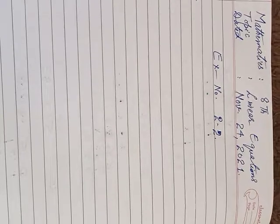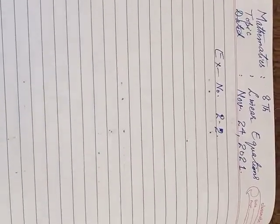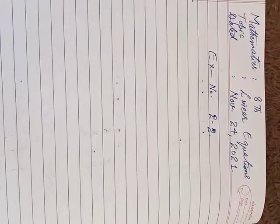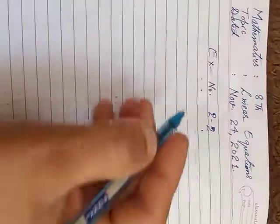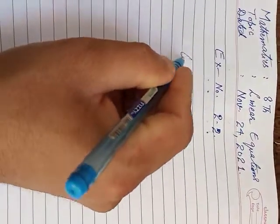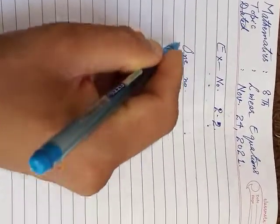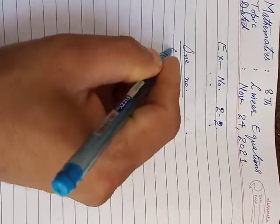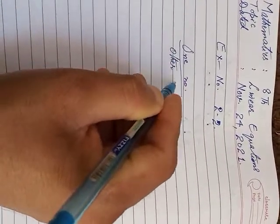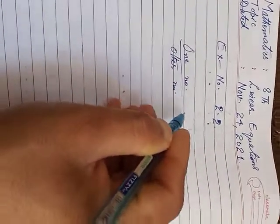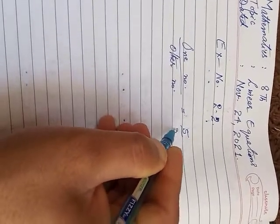Two numbers are in the ratio of 5 is to 3. They differ by 18.